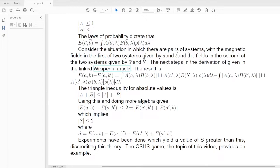A and B, capital A and capital B represent the measurement outcomes for the two particles, and they satisfy these inequalities. Basically, they are both less than 1 in magnitude. The laws of probability dictate this formula for the expectation value as an integral, a weighted sum, if you like, of the product of A and B, weighted by the probability distribution of the hidden variable, lambda.